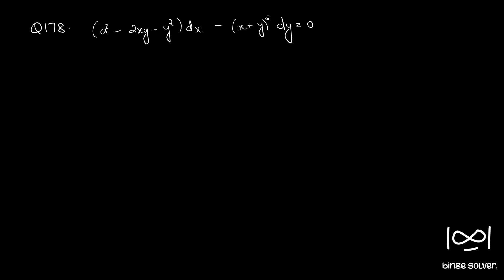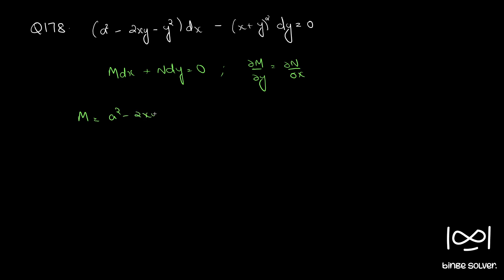Question number 178: (x² - 2xy - y²)dx - (x + y)² dy = 0. The given equation is in the form M dx + N dy = 0. We will check whether the given equation is exact using the necessary and sufficient condition ∂M/∂y = ∂N/∂x. Here M = x² - 2xy - y² and N = -(x² + y² + 2xy).